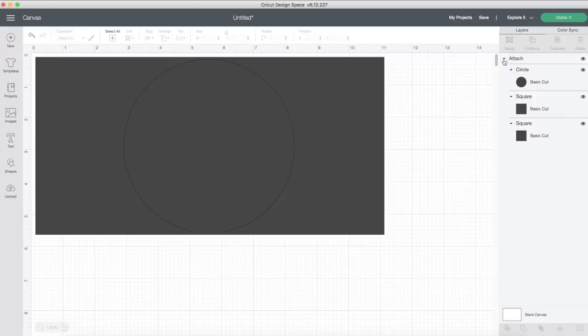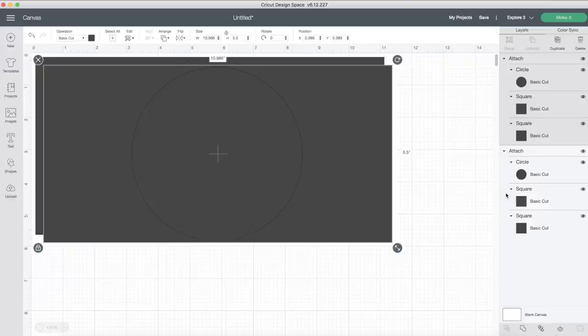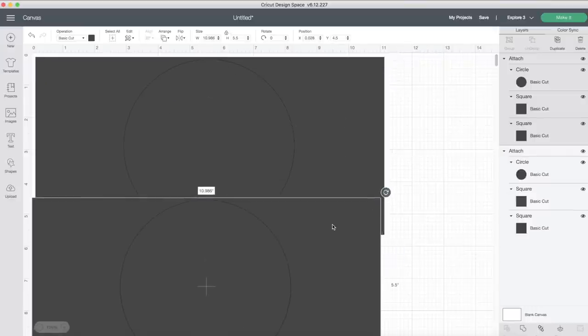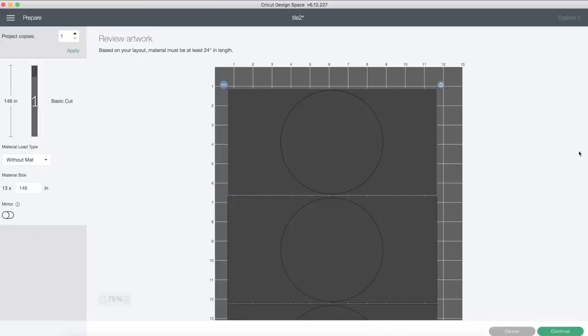We're going to attach all of our shapes together so that they're on one layer, and this essentially will make it easy to duplicate our tiles because we need about 80 of these. Once you have all of your tiles laid out, we can go ahead and create our project.